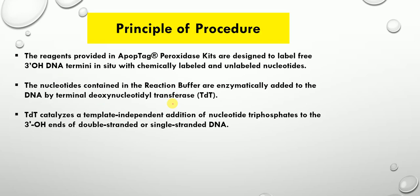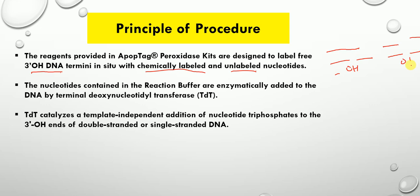The reagents provided in the ApopTAC peroxidase kits for the TUNNEL assay are designed to label the 3' hydroxyl ends of the DNA termini in situ with chemically labeled and unlabeled nucleotides. So if we have an apoptotic cell with a single-stranded break or a double-stranded break, there will be a free hydroxyl group at each break.